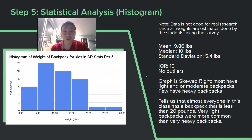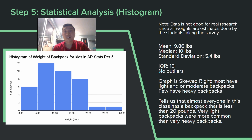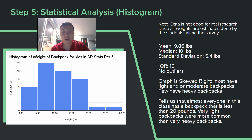Statistical analysis — histogram. This histogram shows a slight right-skewed distribution for weight of backpack, with number of students on the y-axis. The mean was 9.8 pounds, the median was 10 pounds, standard deviation was 4.5 pounds, and the interquartile range was 10. Using the 1.5 IQR rule, there were no outliers. The graph is skewed right, so most backpacks are light to moderate and very few are heavy. Almost every backpack was less than 20 pounds, with two backpacks weighing equal to or more than 20 pounds.